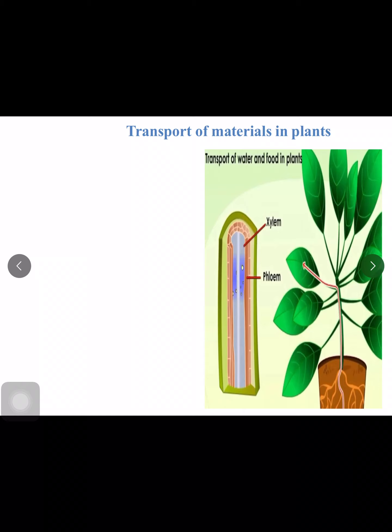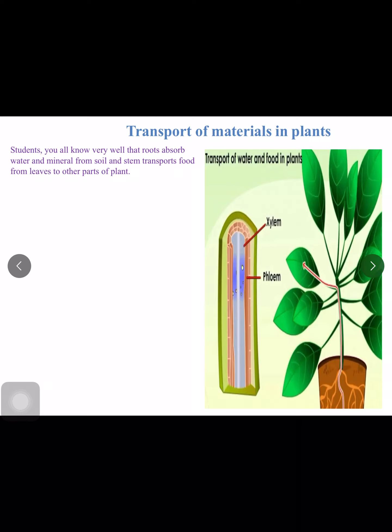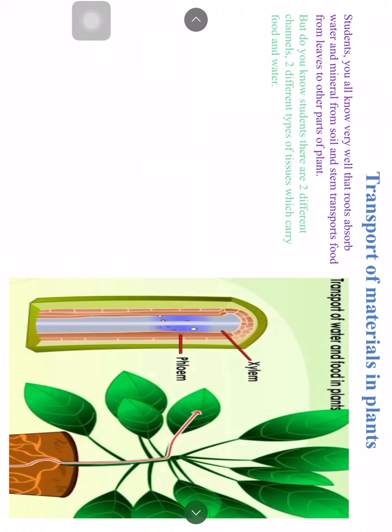There is always a system through which transportation takes place. All living things are made up of cells, and there are certain special cells made for this function. There are two different channels, or tissues — a collection of cells — which carry food and water. Like two different pipes inside the stem: one carries only food and the other carries only water and minerals. Water is always carried by xylem cells or xylem tissues, from roots to other parts of the plant.